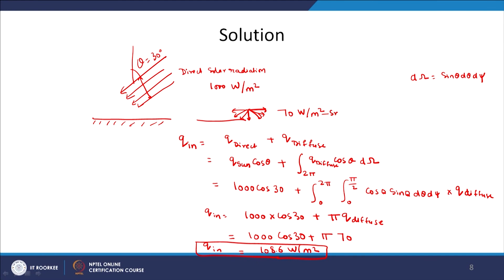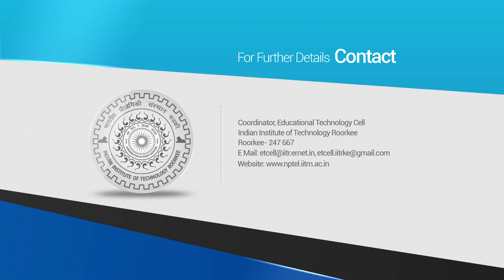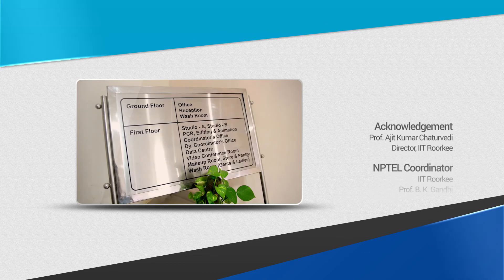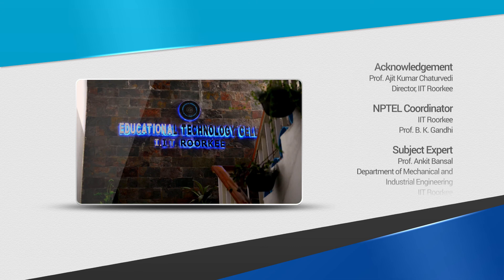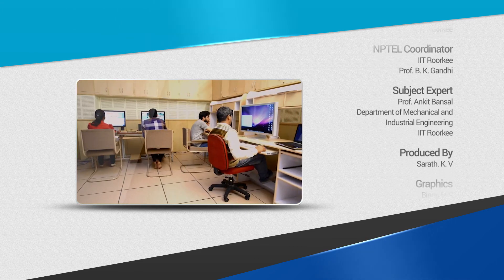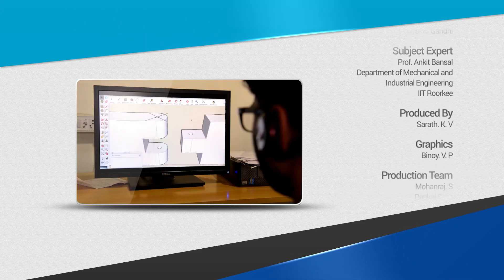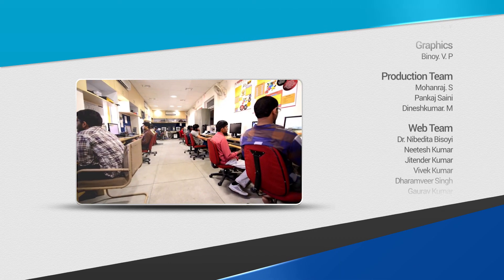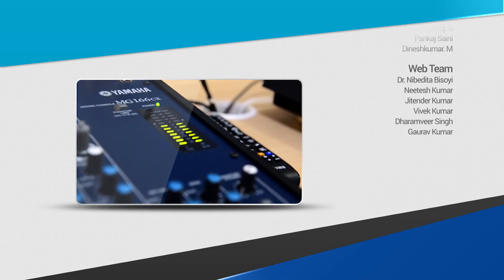So this is how you can use the direct and diffuse components of radiation to find the total solar irradiation on a surface. Thank you very much.